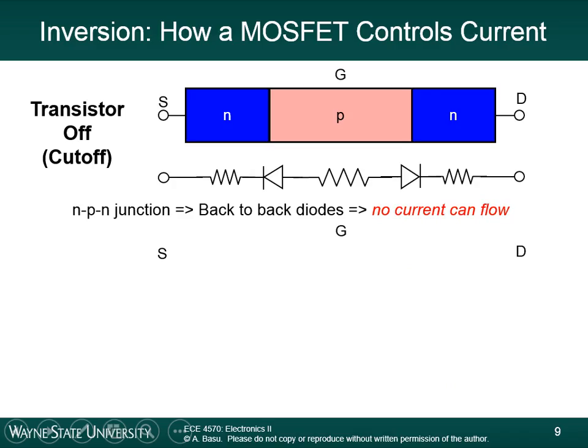Regardless of what voltage you put on the system, there's always going to be one of the diodes that's reverse biased, and reverse-biased diodes don't conduct current — they only allow current flow in one direction. This is what an NMOS device looks like in the cutoff region.